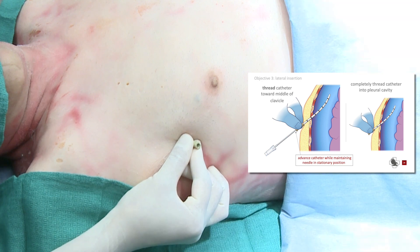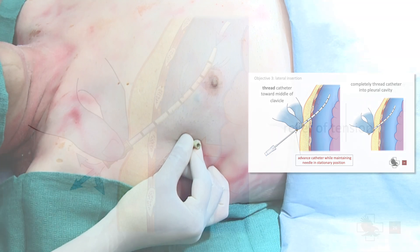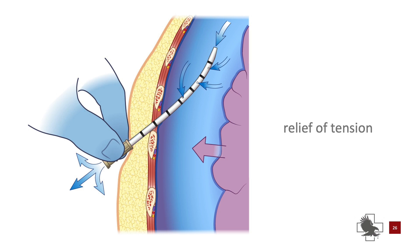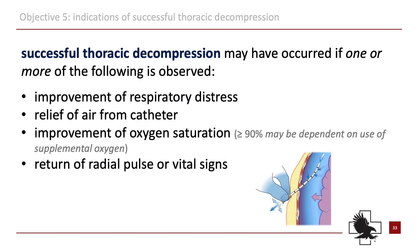Tension should relieve at this point. Hold the catheter in position and secure the catheter hub according to protocol. Successful thoracic decompression will have one or more of the following observed.